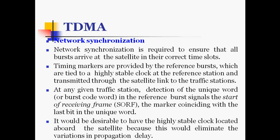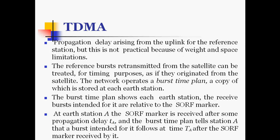At any given traffic station, detection of the unique word — the burst code word — in the reference burst signals the start of the receiving frame, and the marker coincides with the last bit in the unique word. It would be desirable to have the highly stable clock located aboard the satellite, because this would eliminate variations in propagation delay from the uplink at the reference station, but this is not practical due to weight and space limitations. The reference burst retransmitted from the satellite can be treated for timing purposes as if they originated from the satellite.